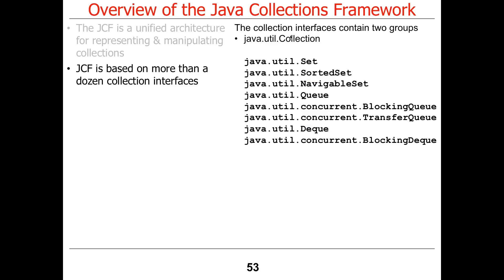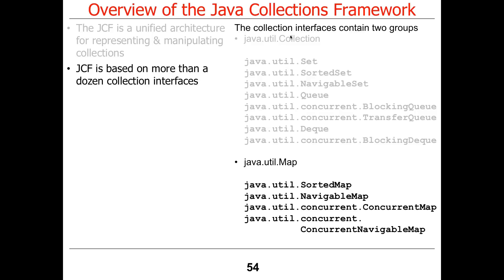There are many, many interfaces that are part of the Java collection framework. You can see things like Set, Queue, Deque — those are some of the core ones. There are also blocking interfaces used for concurrent operations, and a bunch of map interfaces as well. These are some of the core interfaces that get used as part of Java, and then there are all these classes that implement them.